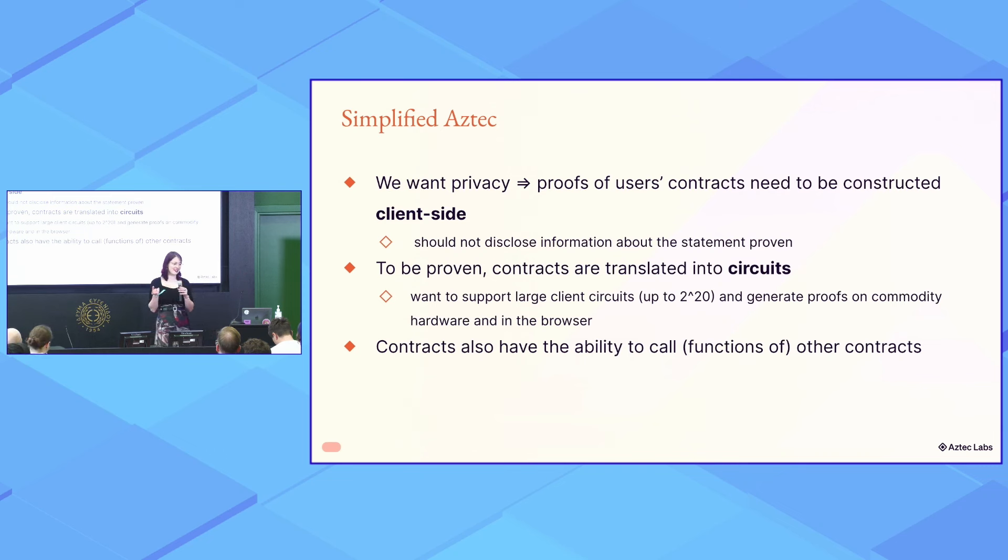So, we need to prove and verify all this stuff. And you might already have in mind, because this is a talk about folding, that we're going to... This is like an example on IVC. And, okay, how can we do this? We can take a naive approach and just do brute force recursion. We take an IOP and the PCS. We take an elliptic curve PCS, because we want fast verification on chain. And we prove each circuit, and then we recursively verify it. But the problem with this is that you end up with very large recursive verifiers, due to the non-native operations there caused by the PCS.